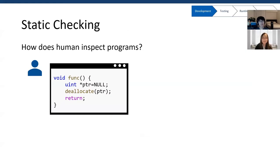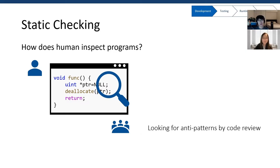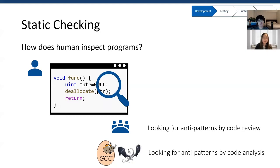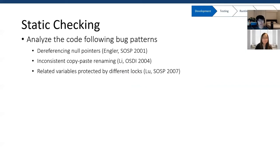Let's start with static checking at the development stage. After implementing a program, a widely used process in industry is code review. During a code review, people look at the code to find anti-patterns that might suggest bugs. To automatically do this, we can replace human reviewers with a compiler — letting it scan through the code and find anti-patterns. Different bug patterns lead to different static checking tools. Some look for dereferencing null pointers, some look for renaming errors in copy-pasted code, and some look for concurrent bugs by analyzing correlations between variables accessed in the code.